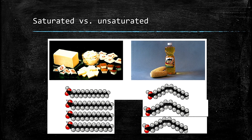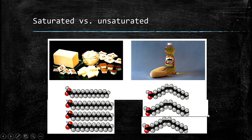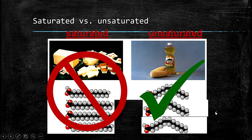So the conclusion is: saturated fats are not healthy, and neither are trans fats, whereas cis unsaturated fats are a much healthier choice — such as the fats found in fruits, vegetables, and fish.